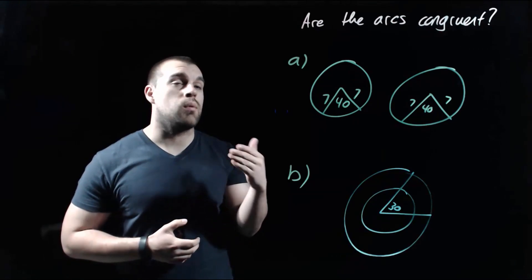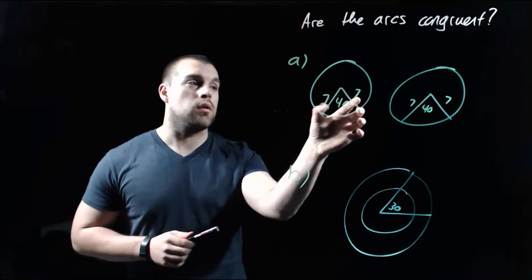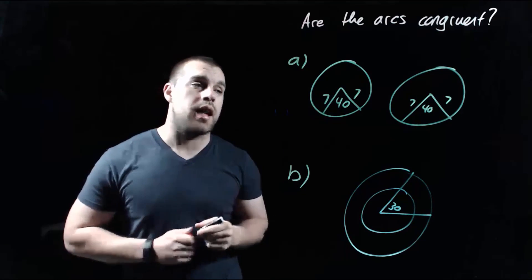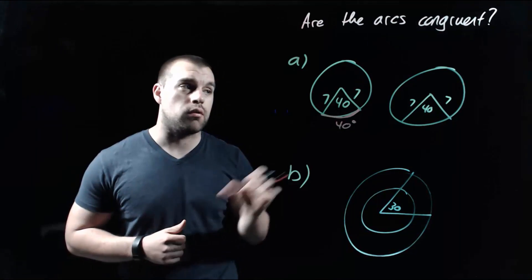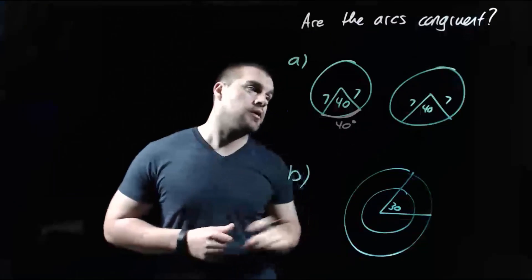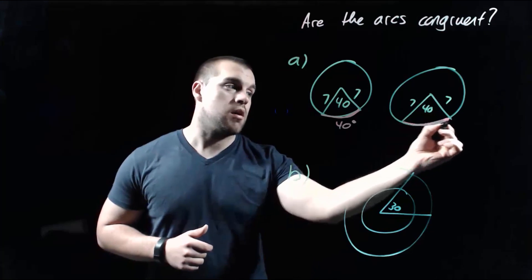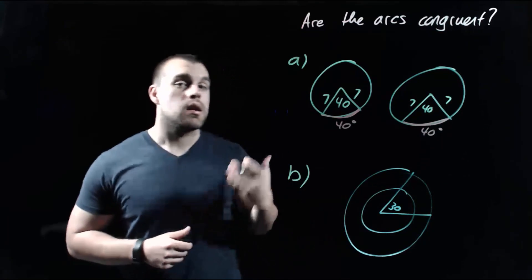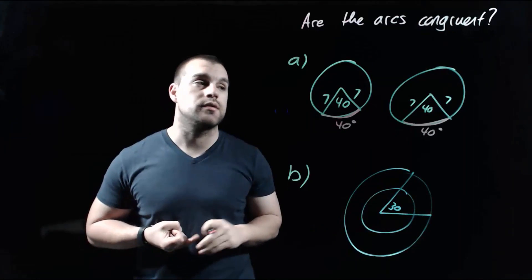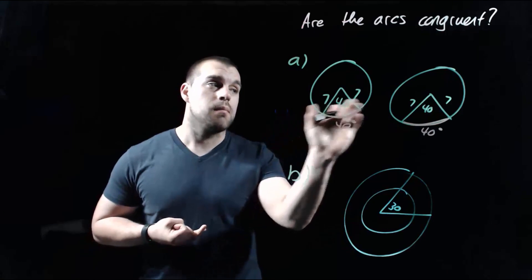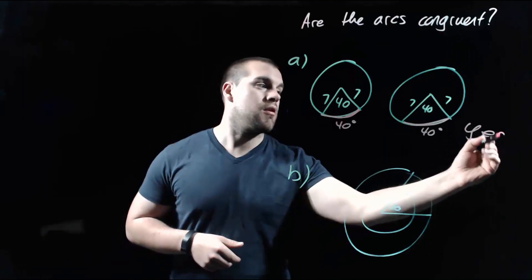Here we've got two examples to decide whether the arcs are congruent. In example A, we've got a circle with a radius length of 7 and a central angle of 40 degrees, so the arc is a 40-degree arc. The other circle also has a radius length of 7 and a central angle of 40 degrees, giving a 40-degree arc. Both arcs have the same degree measure and both circles have the same radius length of 7, so yes — these arcs are congruent.